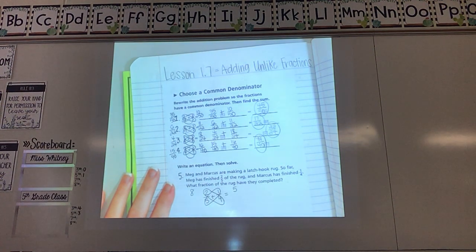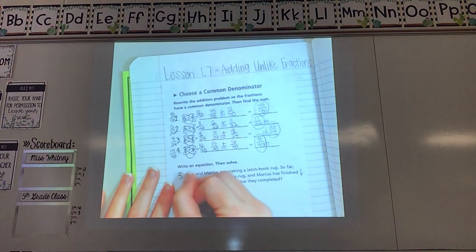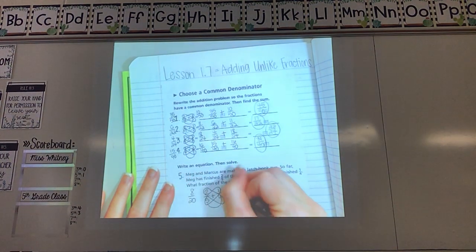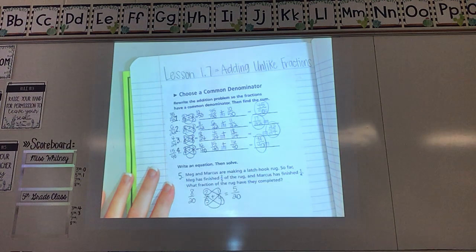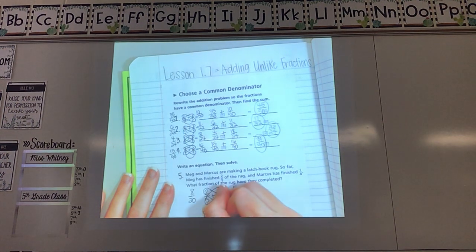After I cross multiply, I always multiply the two bottom numbers together. So 4 and 5 would be 20. Add that underneath both of these. I'm going to copy down my new fractions. 8 twentieths. I was adding, plus 5 twentieths.